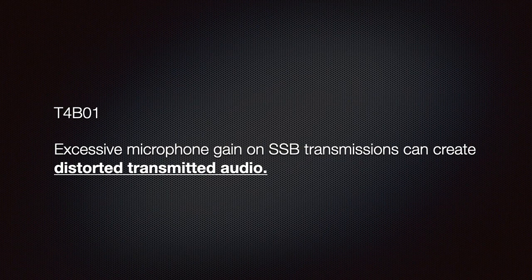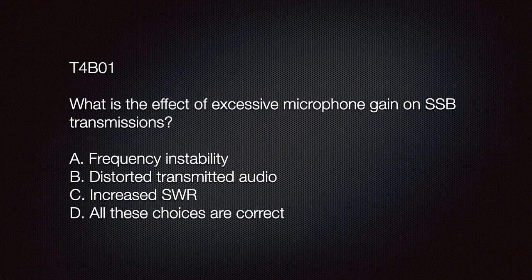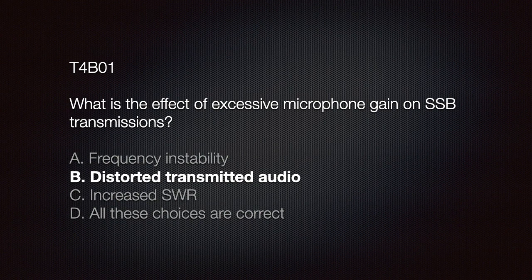We should know that excessive microphone gain on single sideband or SSB transmission can create distorted transmitted audio. Once the signal exceeds the maximum amplitude of the amplifier, it will clip the waveform. This clipping causes the audio to sound distorted because part of the wave is now missing. The exam question is: what is the effect of excessive microphone gain on single sideband transmissions? The correct answer is B — distorted transmitted audio.